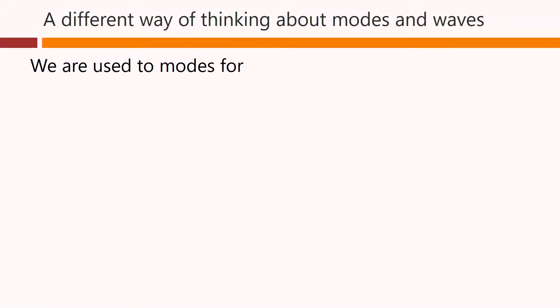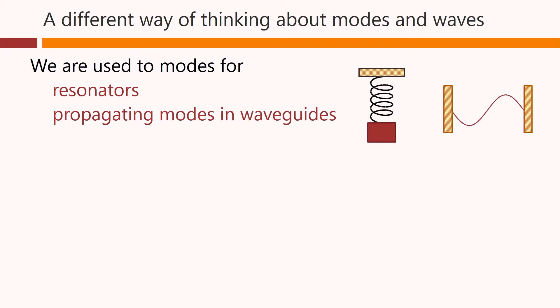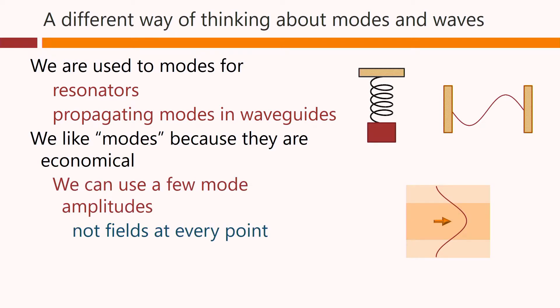We are used to modes for resonators, such as a mass on a spring resonator or a standing wave resonator, and for propagating modes in waveguides. We like modes because they are economical. We can use a few mode amplitudes, not fields at every point, and we can often count modes meaningfully.